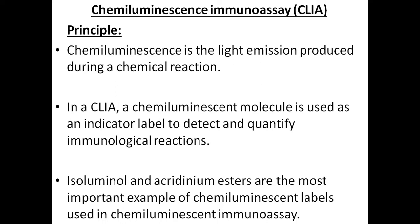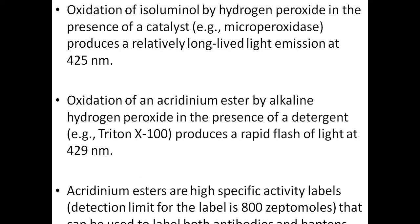Isoluminol and acridinium esters are the most important examples of chemiluminescent labels used in chemiluminescent immunoassay. Oxidation of isoluminol by hydrogen peroxide in the presence of a catalyst, for example microperoxidase enzyme, produces a relatively long-lived light emission at 425 nanometers. Oxidation of an acridinium ester by alkaline hydrogen peroxide in the presence of a detergent called Triton X-100 produces a rapid flash of light at 429 nanometers.